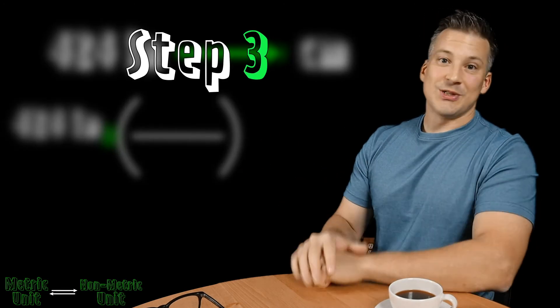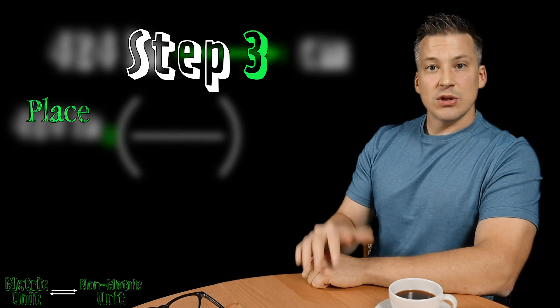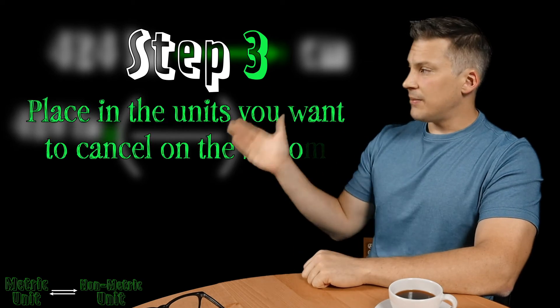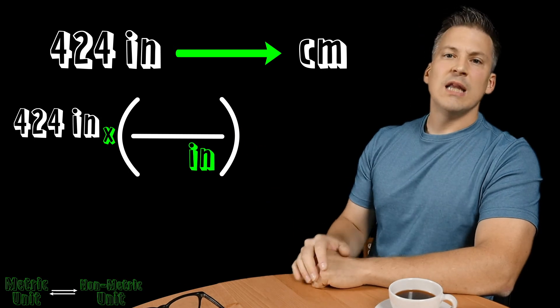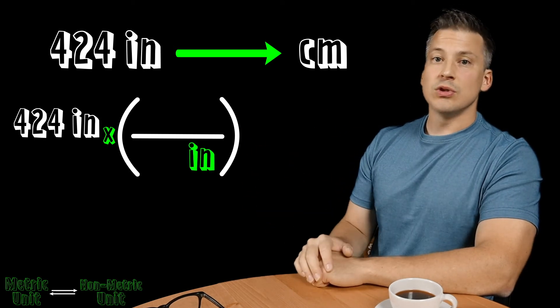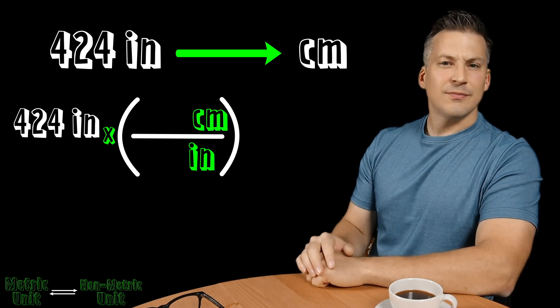The third step here is also the same, so it's great. The third step here is going to be to place in the units you want to cancel on the bottom. So we want the inches to cancel, so the inches go on the bottom. And the unit we want to convert to, which in this problem is going to be the centimeters, they go on the top. Fairly straightforward.